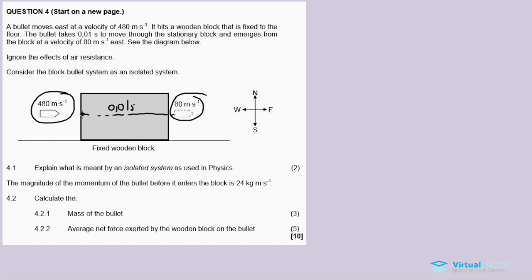Question 4.1: Explain what is meant by an isolated system. An isolated system is a system on which the net external force is zero, or no external forces are acting on the system. That's the definition for an isolated system.